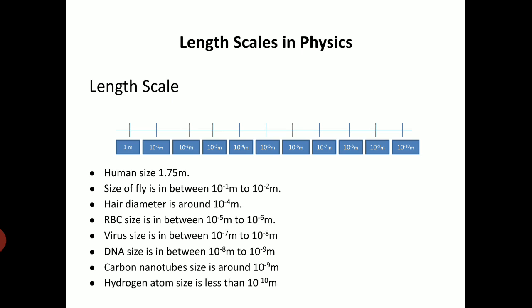Virus size is in between 10 to the power of minus 7 to 10 to the power of minus 8 meter. DNA size is in between 10 to the power of minus 8 to 10 to the power of minus 9 meter. Carbon nanotube size is of around 10 to the power of minus 9 meter. Hydrogen atom size is less than 10 to the power of minus 10 meter, that is equivalent to angstrom.